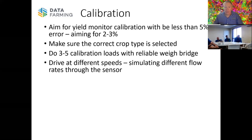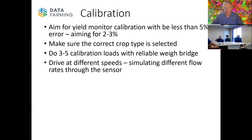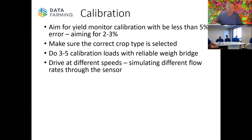The key thing for calibration is getting different flow characteristics through the sensor. We need to drive at different speeds, or use different comb widths. If you're on controlled traffic and don't want to drive all over the paddock, the most logical approach is to drive at really slow speeds — that simulates a light crop and a light flow into the sensor — then speed up and go super fast to load that sensor up and get the top end. So you do a slow run, unload it, do a medium speed run, unload it, and do a fast run — that's how you get your three to five calibration points.